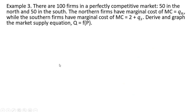In our last example, there are 100 firms in a perfectly competitive market: 50 are located in the north and 50 in the south. The northern firms have a marginal cost given by one equation, while the southern firms have a different marginal cost given by another. We want to derive and graph the market supply equation.